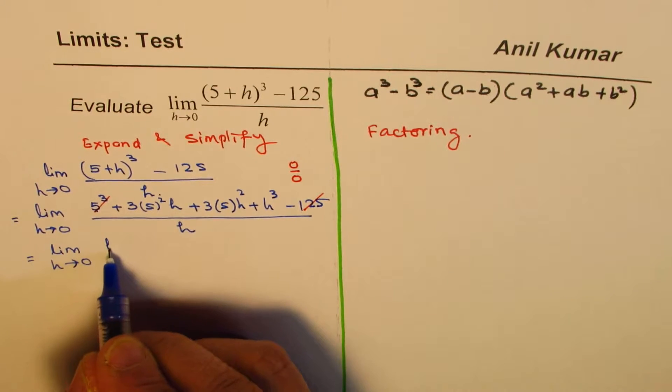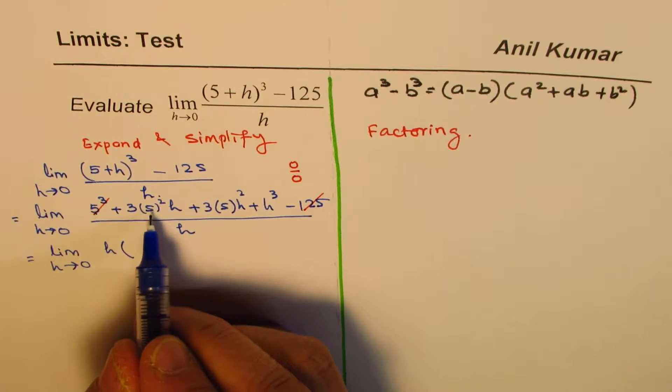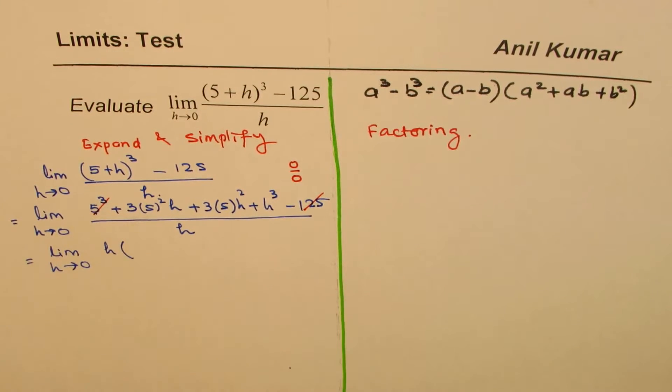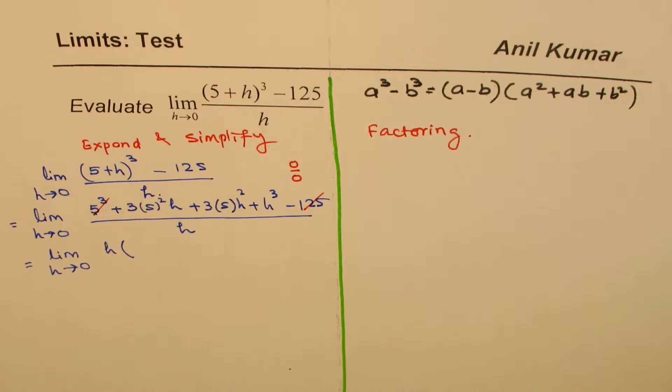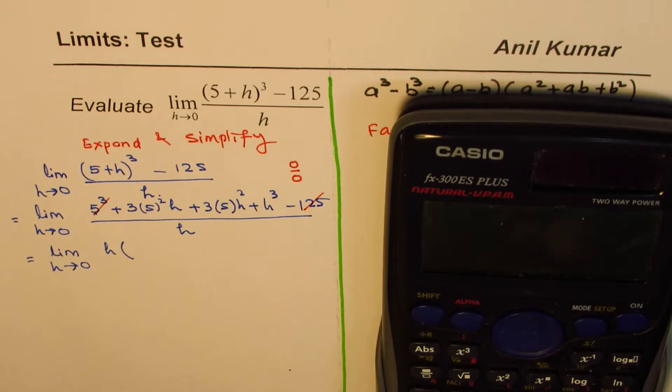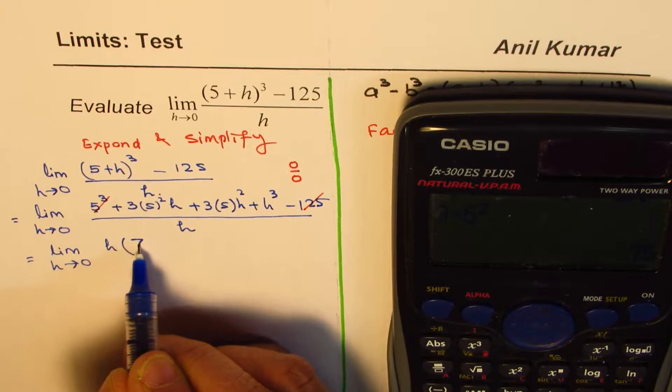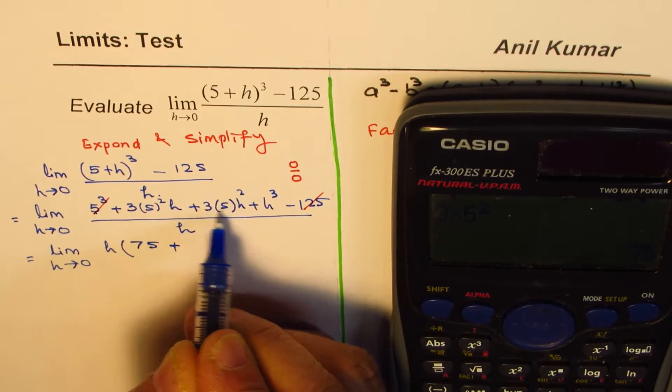And what we have here is we have h as a common factor for all these terms, right? So, I will take h common from what remains. This is 25 times 3, which is, we can use calculator, right? So, 25 times 3 is 75.